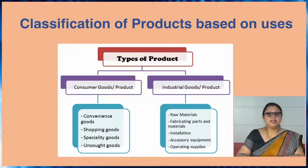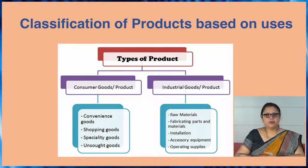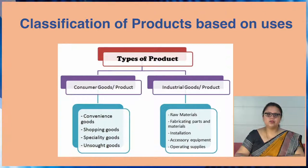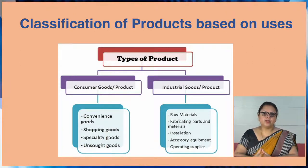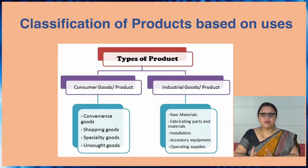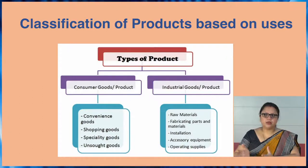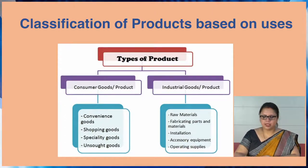Now we will discuss industrial products. Consumer products are for the ultimate customers' consumption, but industrial products are purchased by industries for the preparation of consumer goods. Industrial products are goods used for commercial production or in carrying out business activities — they are for commercial use, not personal use. Different types include installation of machinery, purchase of raw materials, fabricated materials, parts of machinery, operation supplies, and accessory equipment.